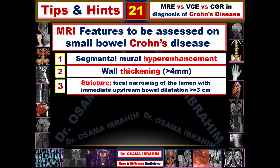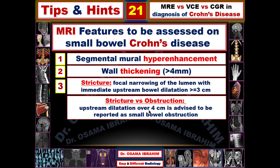The third MRI feature is stricture, meaning focal narrowing of the lumen with immediate upstream bowel dilatation equal to or more than 3 cm proximal to the region of narrowing. If the upstream dilatation is more than 4 cm it is considered an obstruction rather than a stricture — this is the landmark for differentiating stricture from obstruction on MRI. Upstream dilatation over 4 cm should be reported as small bowel obstruction according to the literature.